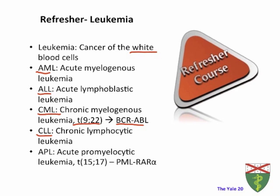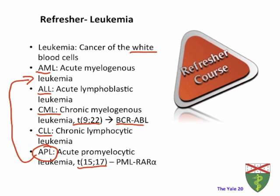APL is a subform of AML and stands for acute promyelocytic leukemia — also a very classic translocation between chromosome 15 and 17, forming a fusion gene between PML, the promyelocytic leukemia gene, and RAR-alpha, retinoid acid receptor alpha.